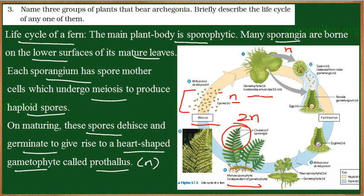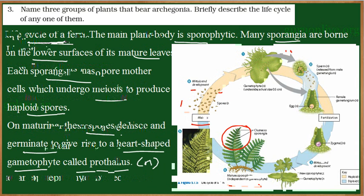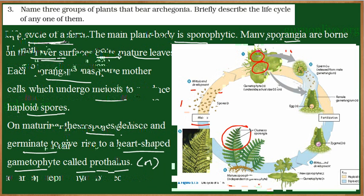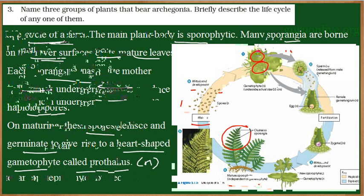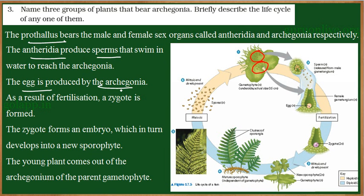So the diploid plant body gives rise to a haploid plant body. As this prothallus develops, it will have structures — Antheridium and Archegonium. These structures are haploid in nature and they produce gametes which are also haploid in nature.